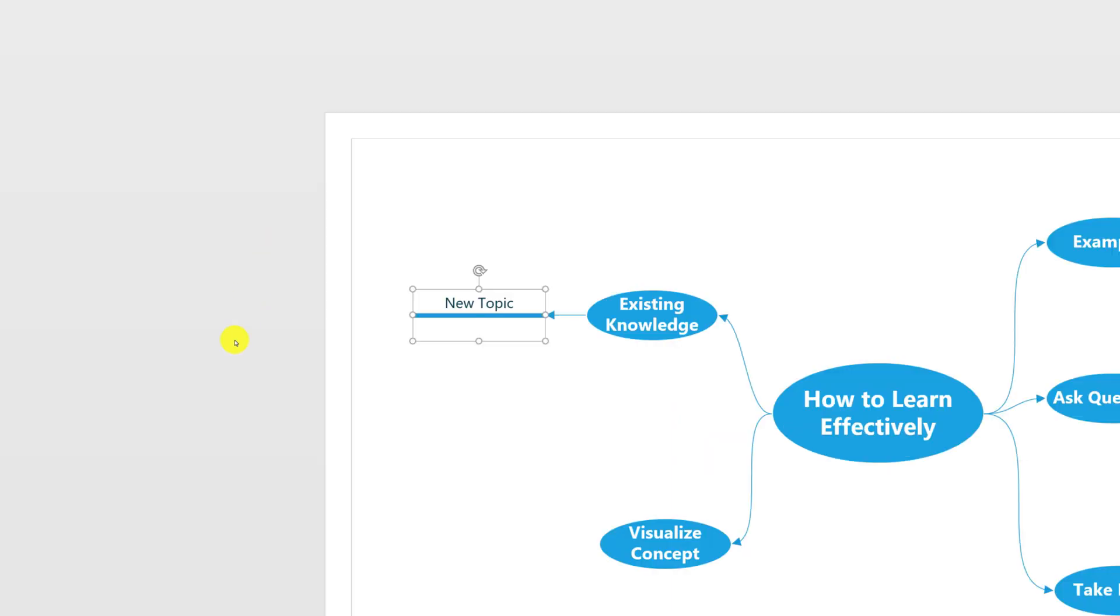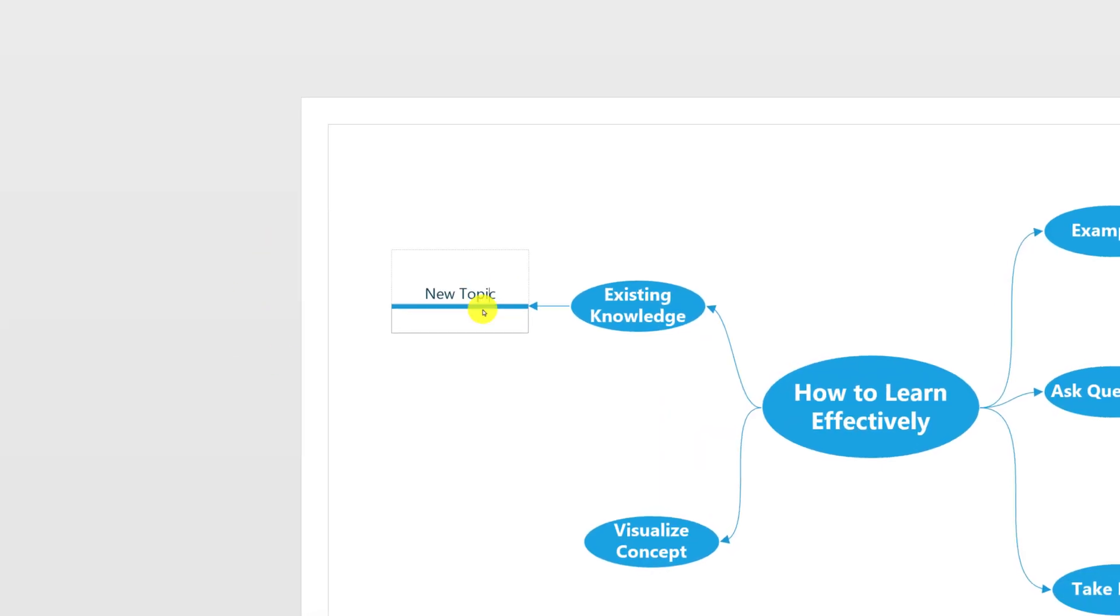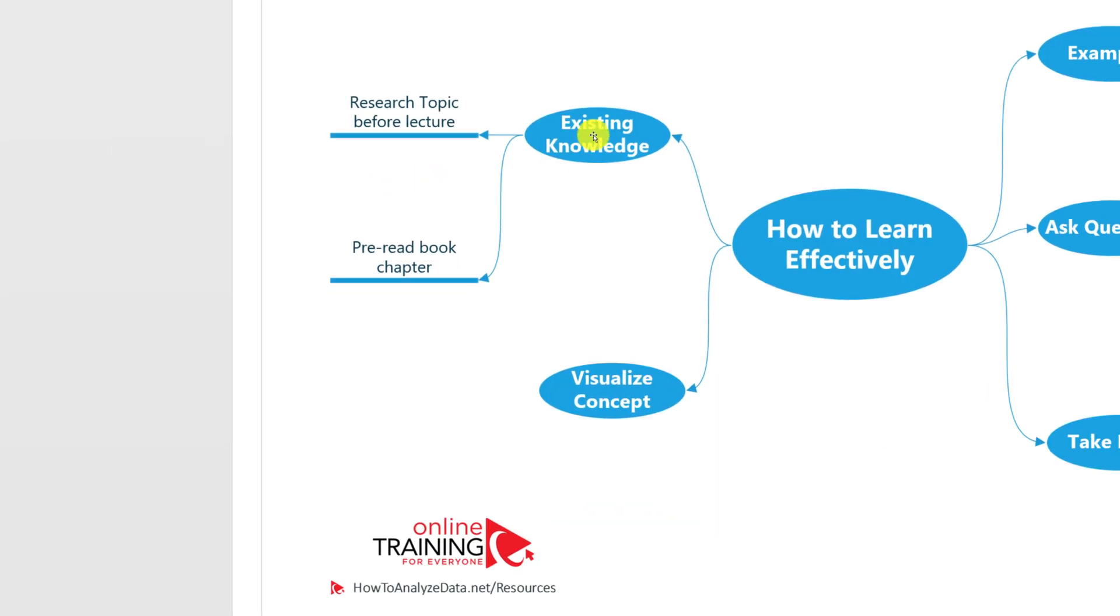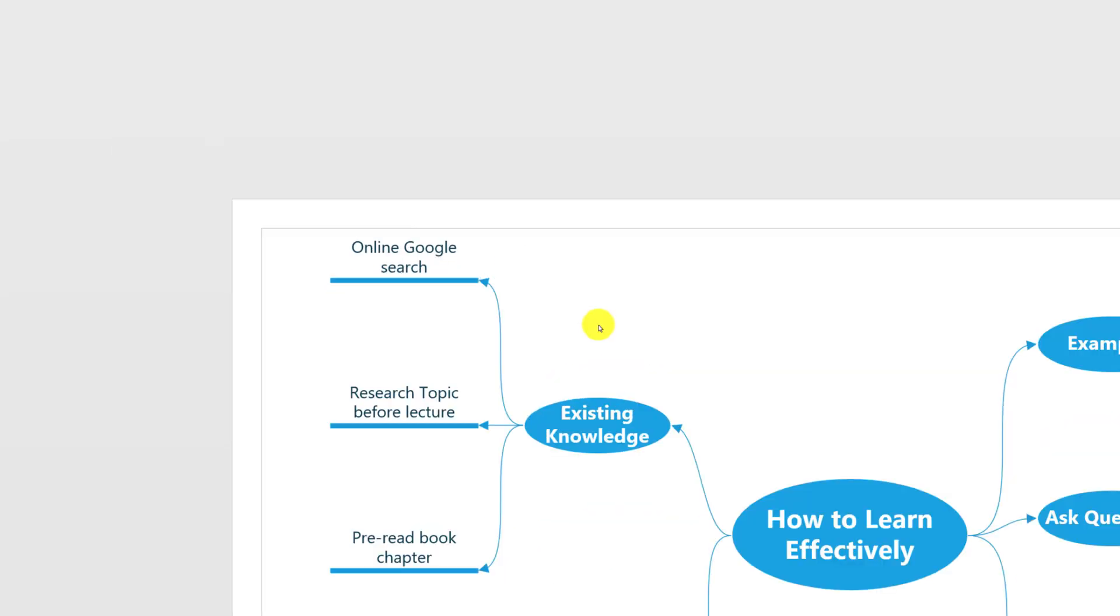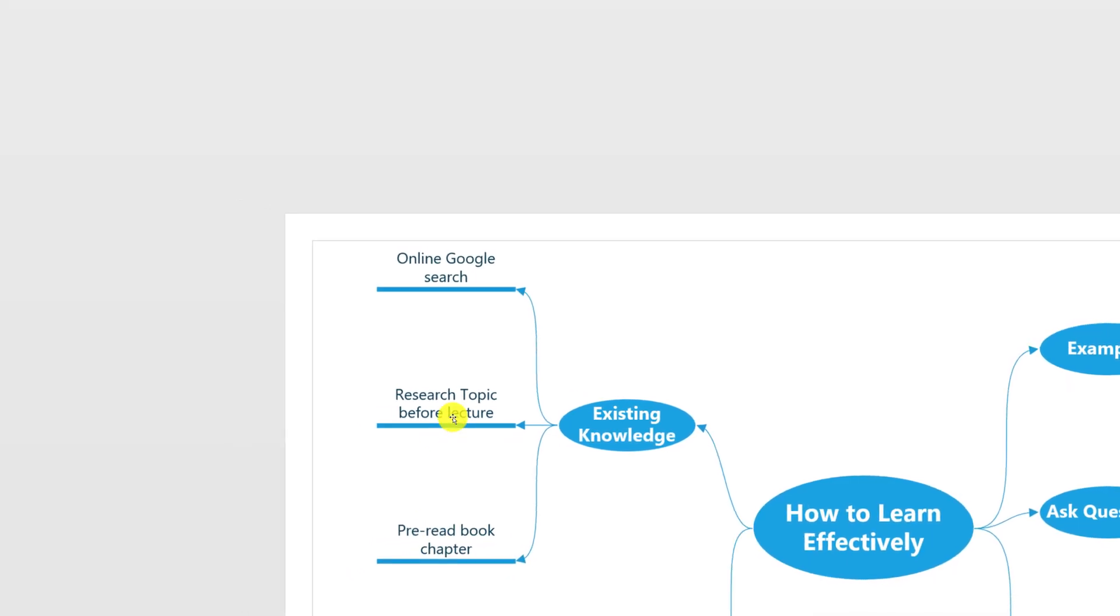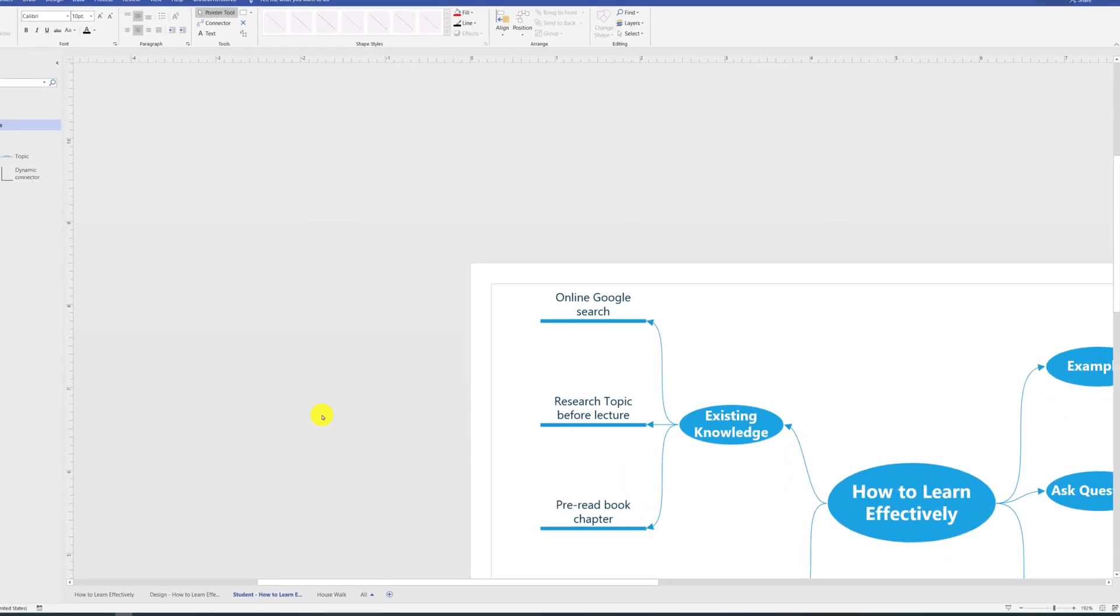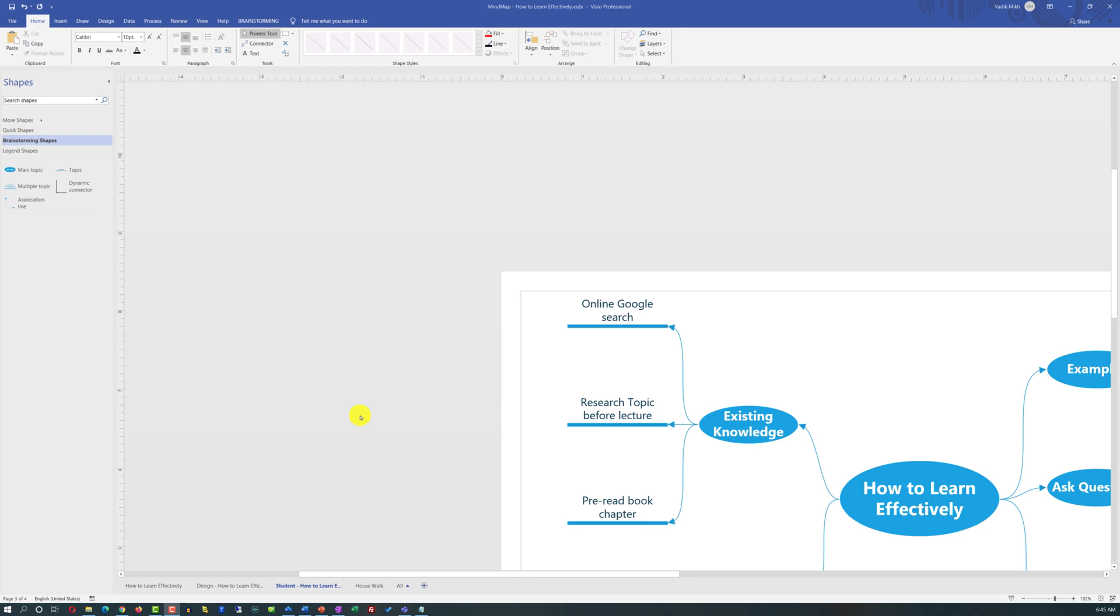For example, you can research the topic before the lecture, you can also pre-read the book chapter, and you can also do online Google search on the topic. What's interesting is that online Google search and pre-reading of the book chapter could be a variation of the research topic before lecture.